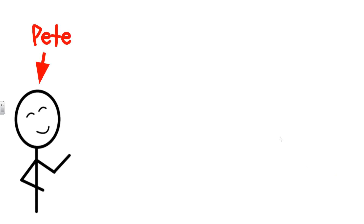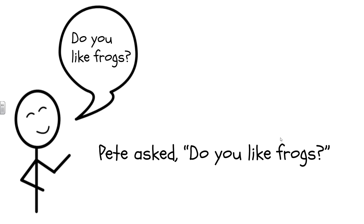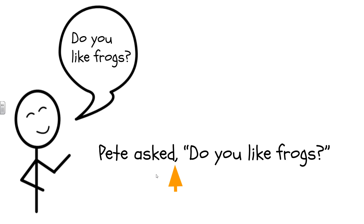Here's our last one. This is Pete. Pete is actually asking a question. He asked, 'Do you like frogs?' Here's my sentence with dialogue: 'Pete asked, do you like frogs?' Again, we are saying who is talking — Pete — but notice that we didn't say 'said' this time. We were more specific and said that he was asking a question, so 'Pete asked.' We still have that comma to separate those two parts of the sentence. Our quotation marks go around the question that Pete asked. We started that sentence inside the quotation marks with a capital D. And this time our punctuation is not a period because Pete is asking a question — it has to be a question mark.